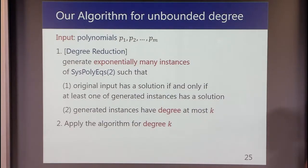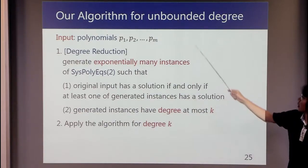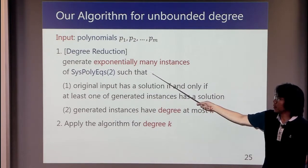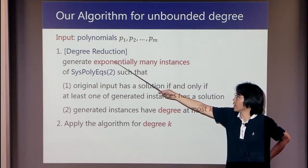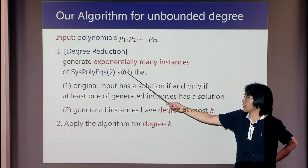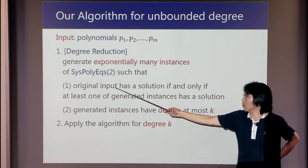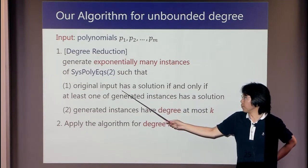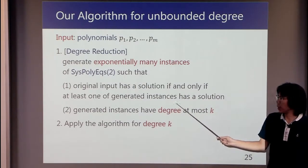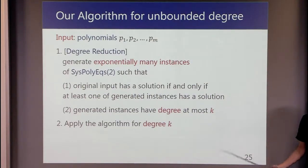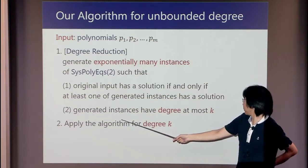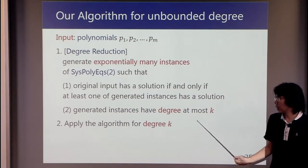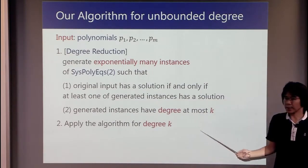Now I would like to explain our algorithm for unbounded degree instances. Here we introduce some procedure called degree reduction. This procedure generates exponentially many instances of SysPolyEqs(2) such that the original input has a solution if and only if at least one of the generated instances has a solution. And second, all generated instances have degree at most k. So now we can apply the algorithm for degree k instances.